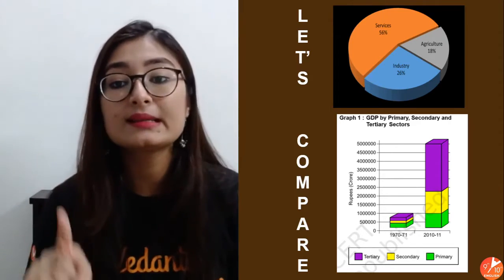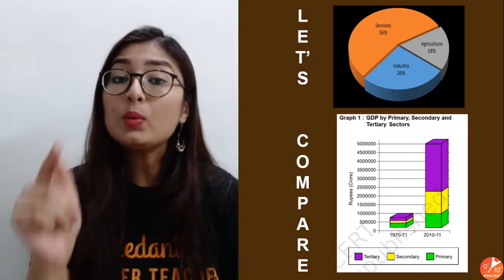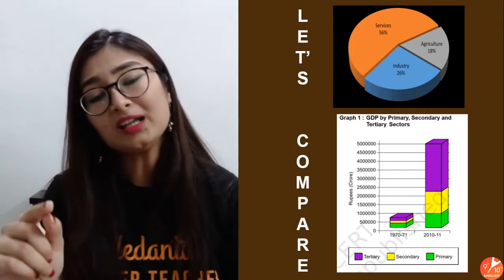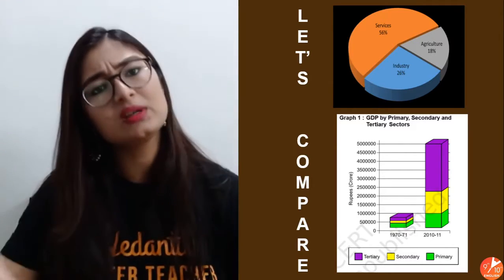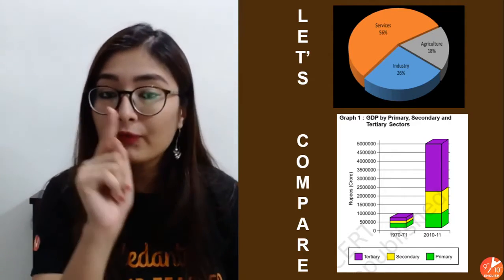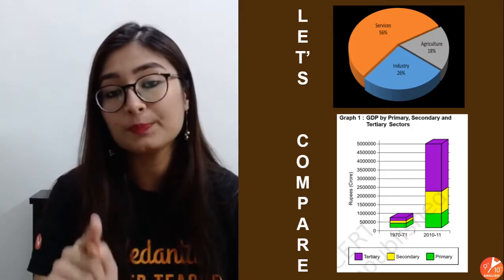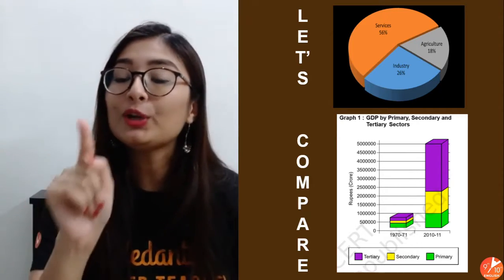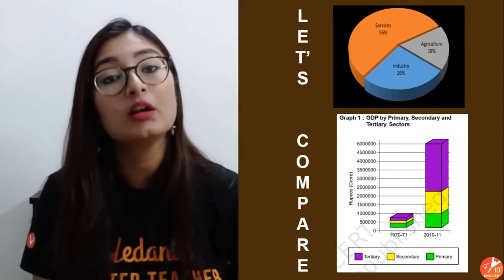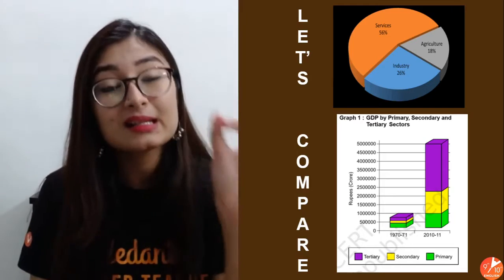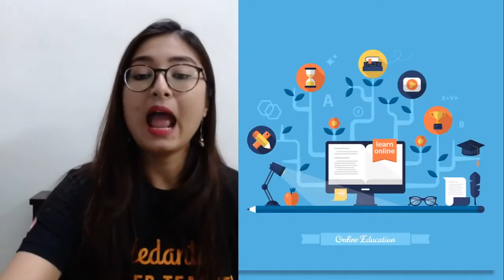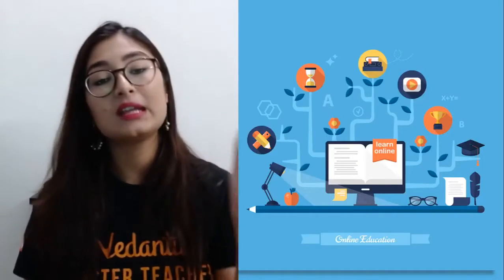Looking at the graph: the tertiary/services sector produces 56% of the GDP, agriculture (primary sector) produces only 18%, and the industrial/secondary sector is around 26%. This is concerning — 54% of the population is contributing only 18% of GDP, whereas far fewer people in the tertiary sector are contributing 56% of GDP. We need to think about this and figure it out.